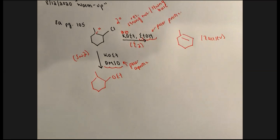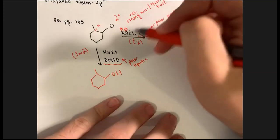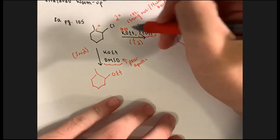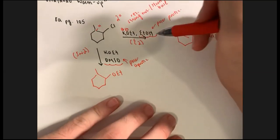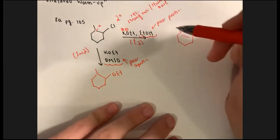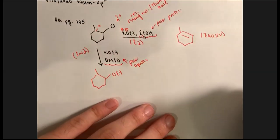Any questions on that? I definitely wanted to clarify that because it was a big issue last time. Practically speaking, it's a rule: if the base and the solvent are a conjugate acid-base pair — meaning the solvent is the protonated version of the base — then you can always assume E2, given that you have a secondary leaving group.